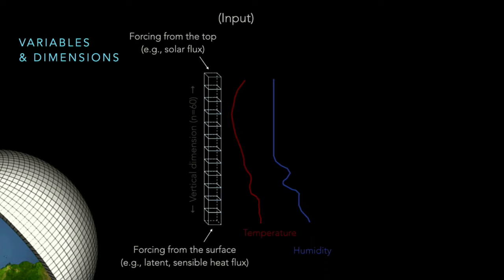In a climate model, the atmosphere is discretized in a 3D mesh. One important thing to remember is that we take each vertical column as an independent sample. Each sample includes many atmospheric variables. For example, in the input, there are some variables that have a vertical dimension — such as temperature and humidity — and there are also scalar variables defined only at the top of the atmosphere or at the surface.